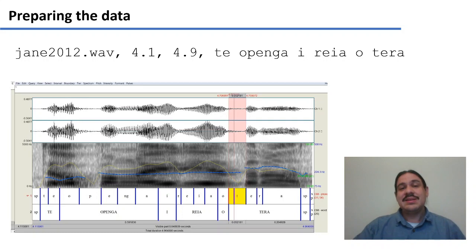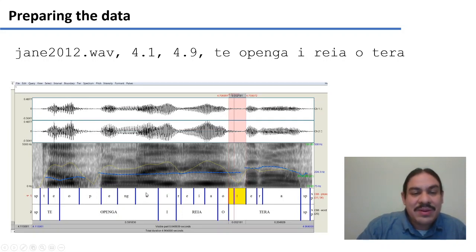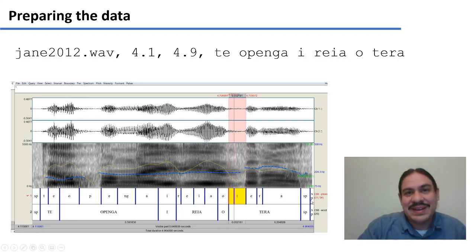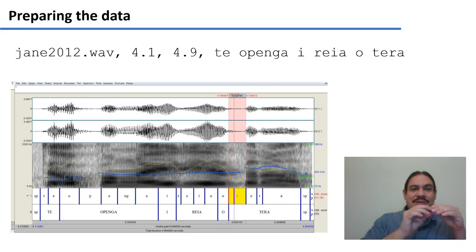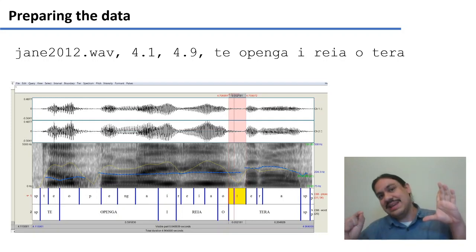From this data, the program is going to try to learn what it is about the spectrogram of an 'A' that makes it an 'A' — what makes this 'A' and this 'A' similar, but also different from this 'E' and this 'E'. When it hears a new recording it's going to try to output whether a slice of the spectrogram corresponds to 'A' or to 'E', for example.